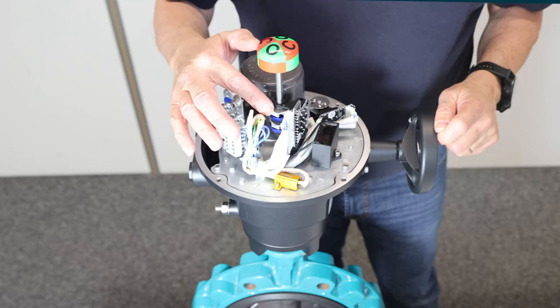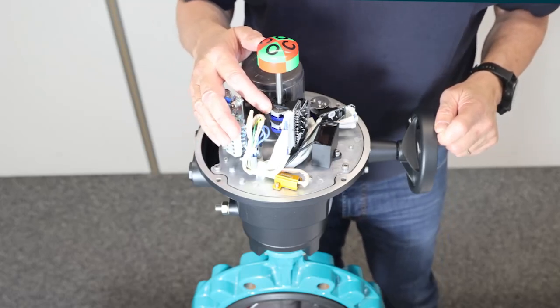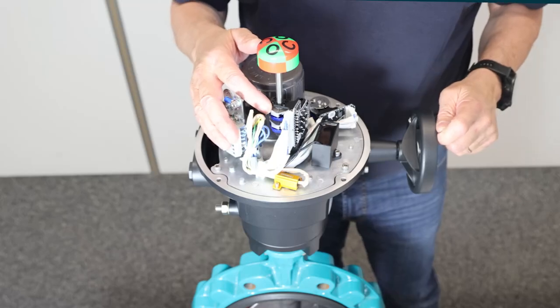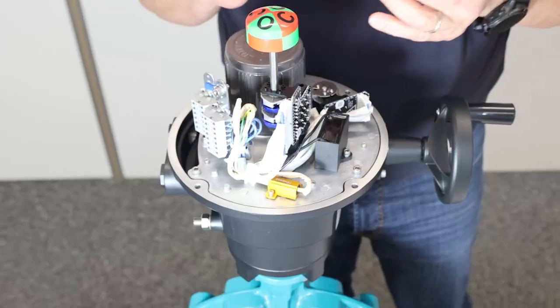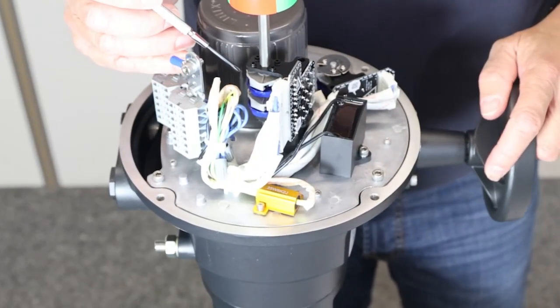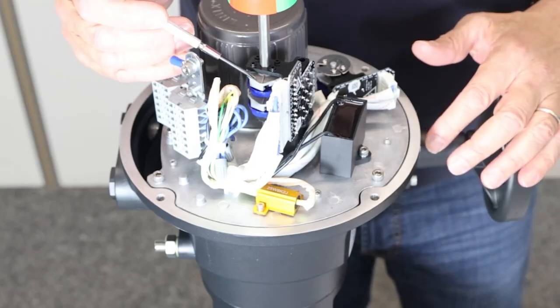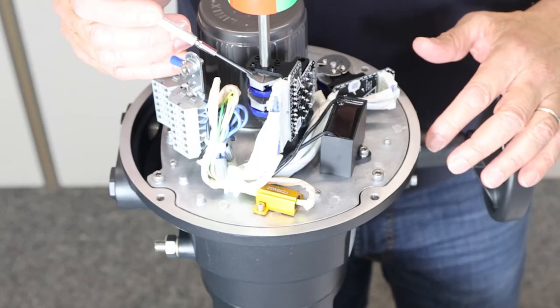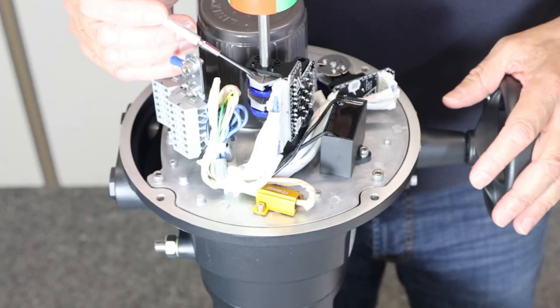The switch cams have been pre-adjusted in factory at 0 and 90 degrees but can be re-adjusted during commissioning if necessary. The blue cams correspond to the clockwise travel switch, usually the closed position, and the grey cams correspond to the counterclockwise travel switch, respectively the open position.